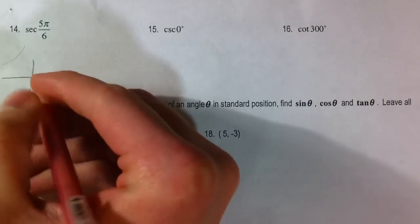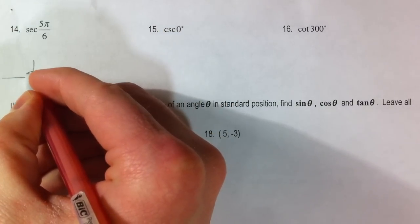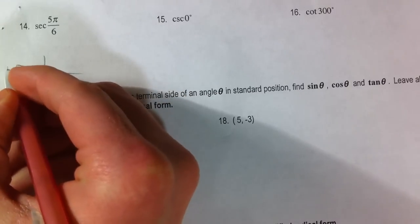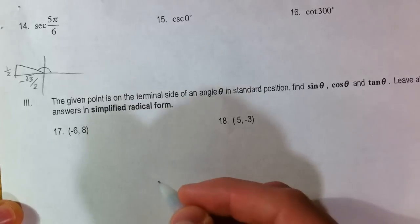Secant of 5π over 6. So we've got 5π over 6, so that's a 30 degree angle, and we're almost all the way to π. And so we've got 1 half as the short side, root 3 over 2 as the long, and because we've gone to the left, it's negative.